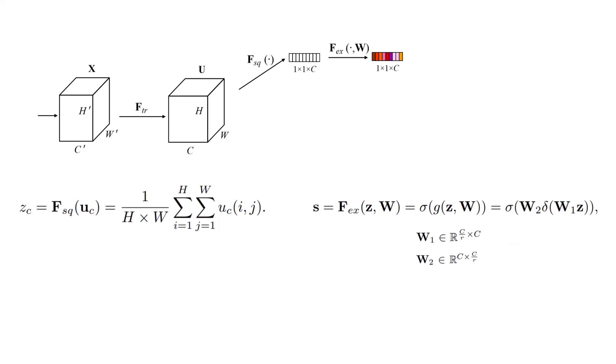And having these coefficients, we just need a scale operator, which is so simple. We just need to multiply each coefficient by the corresponding feature map. And we have this final feature volume that says which channel is more informative than the other one. And hopefully, the convolution kernels after this feature volume would pay more attention to the more informative ones. And yeah, that's the whole general idea.